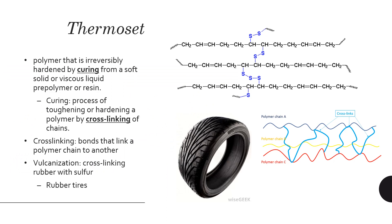A thermoset is a polymer that is irreversibly hardened by curing from a soft solid or viscous liquid pre-polymer or resin. When you cure a thermoset it becomes hard, and it's an irreversible process — you cannot go back to how it was before. Curing is the process of toughening or hardening a polymer by cross-linking. Cross-links are bonds that link polymer chains to one another — you can see chains A, B, and C in the image as three independent long polymer chains.